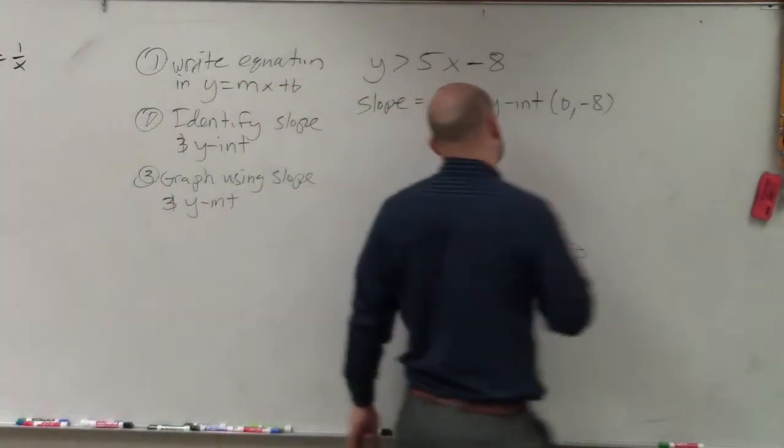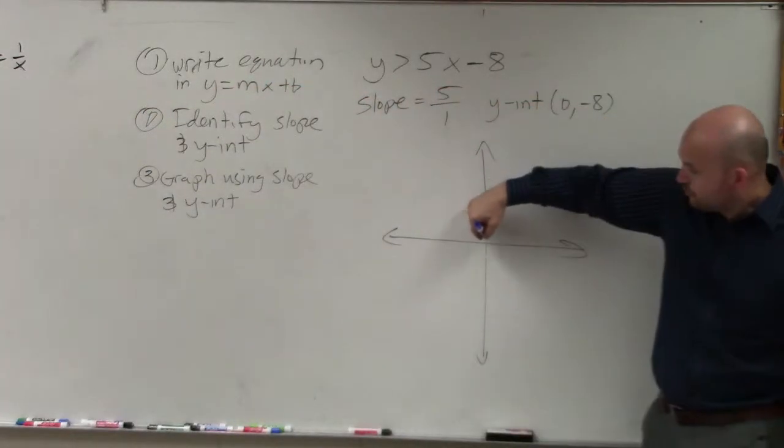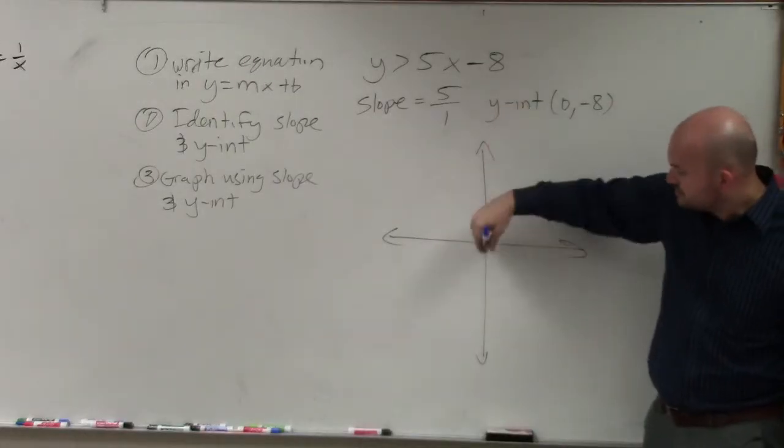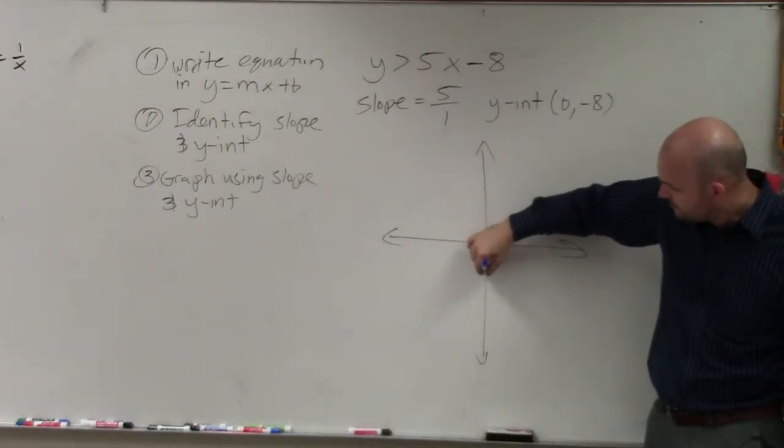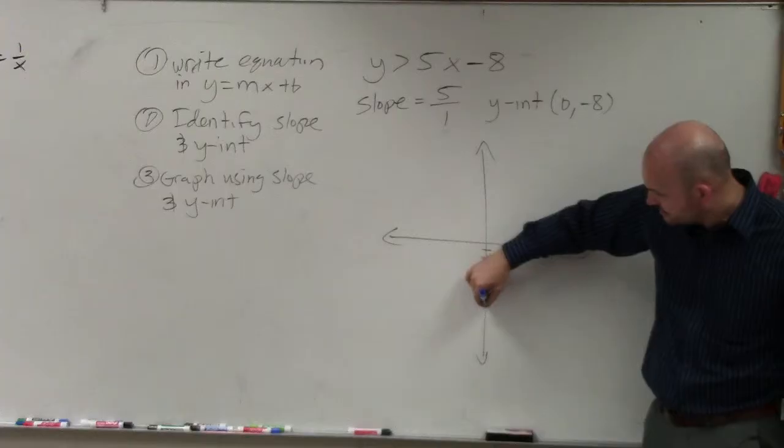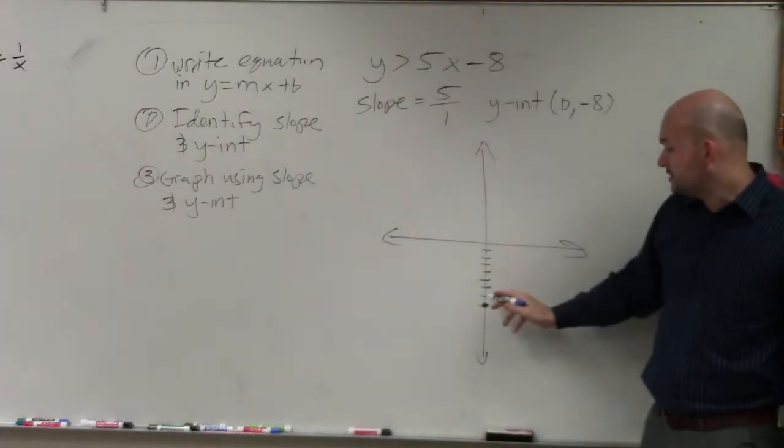So then the next thing is to graph using the slope and the y-intercept. So if we go to our coordinate point, 0, negative 8. Remember, the origin is at 0, 0. So we're just going to go down negative 8. 1, 2, 3, 4, 5, 6, 7, 8. Then we're going to use the slope to find another point.